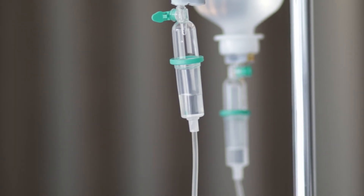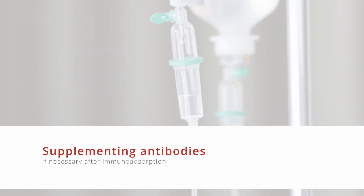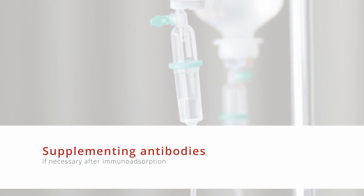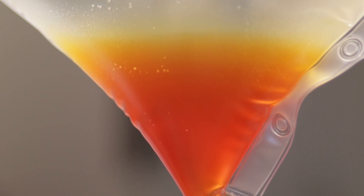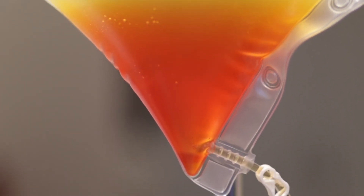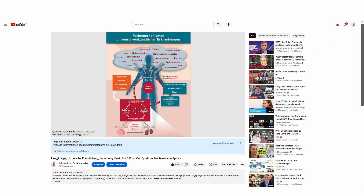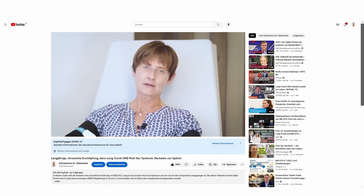After immune absorption, immunoglobulins may need to be replaced after treatment, which is not the case for therapeutic apheresis. Apheresis should remove the acute load of substances that block the regeneration and self-healing of the body as far as possible. But it is also very important to understand where these substances originally came from.